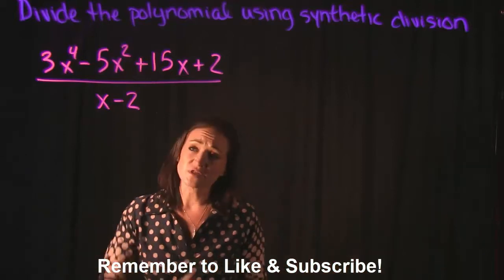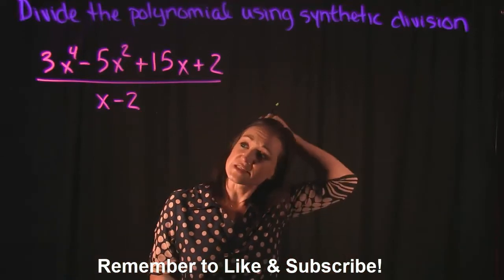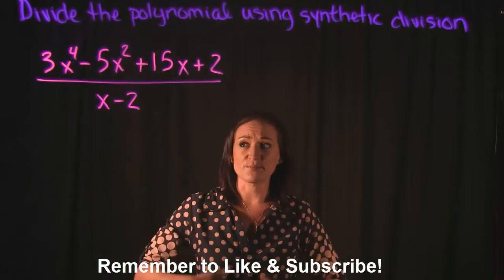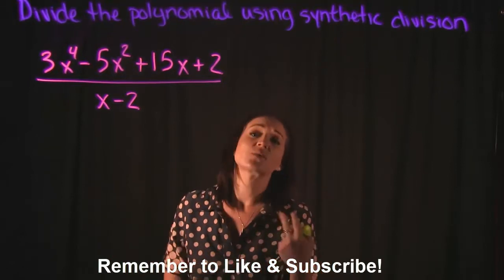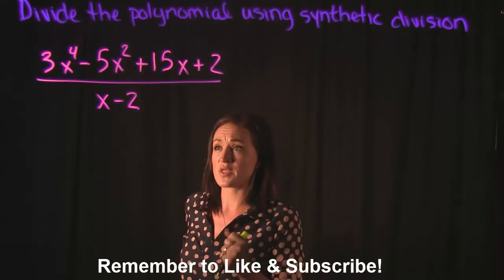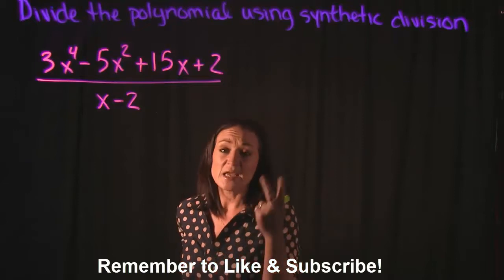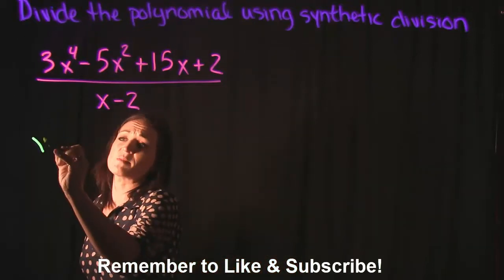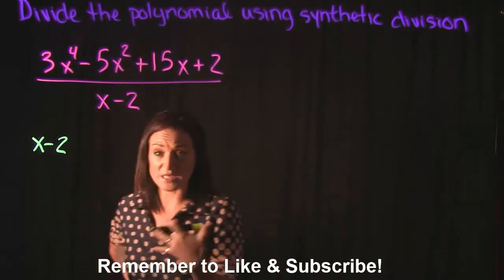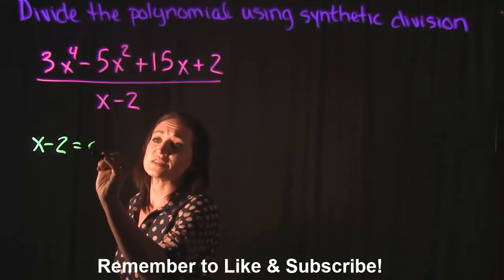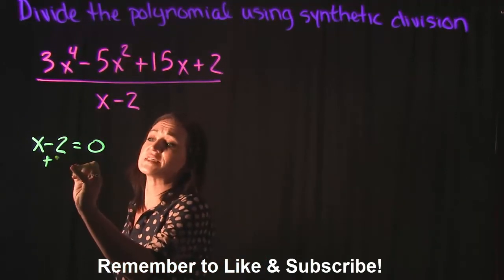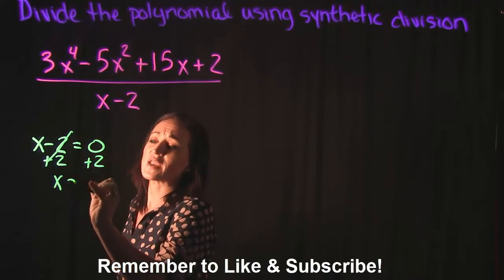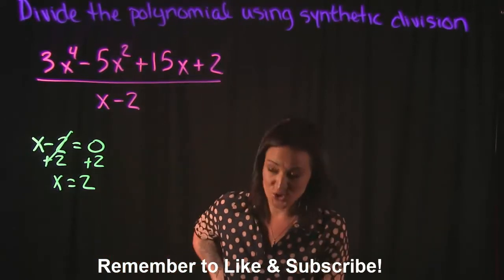First thing that we need to keep in mind if we're using synthetic division, we're dividing this by x minus 2. So the number that we're actually testing, the number that we're actually dividing by, is the number 2. Because remember, the x minus 2 is a factor, and we typically set that equal to 0, and if we do that and solve, we actually get that x is 2.